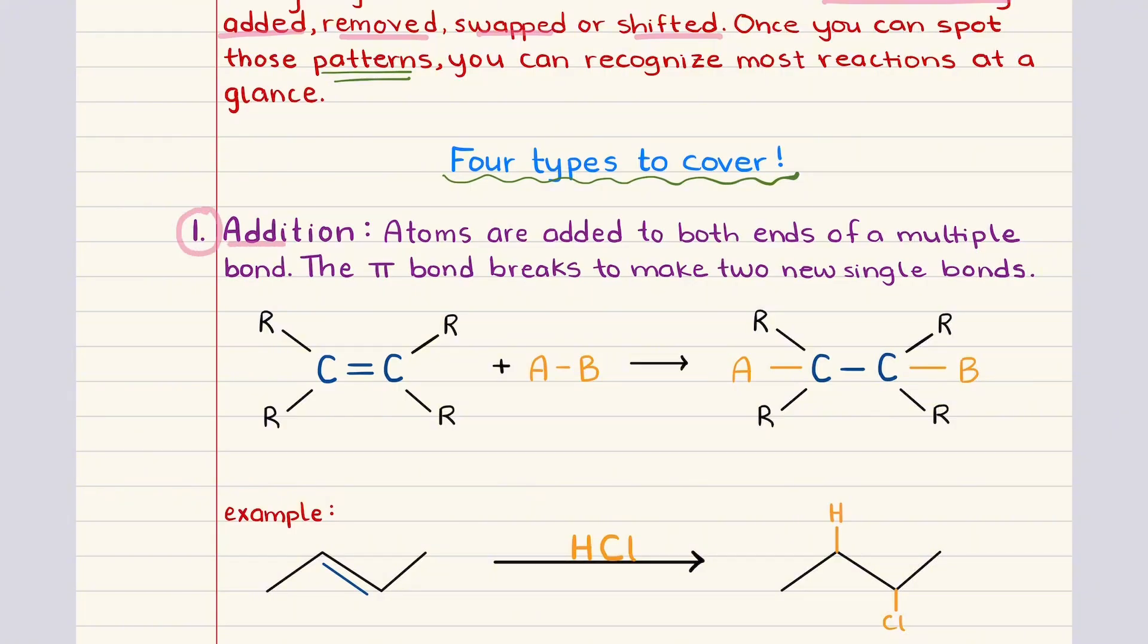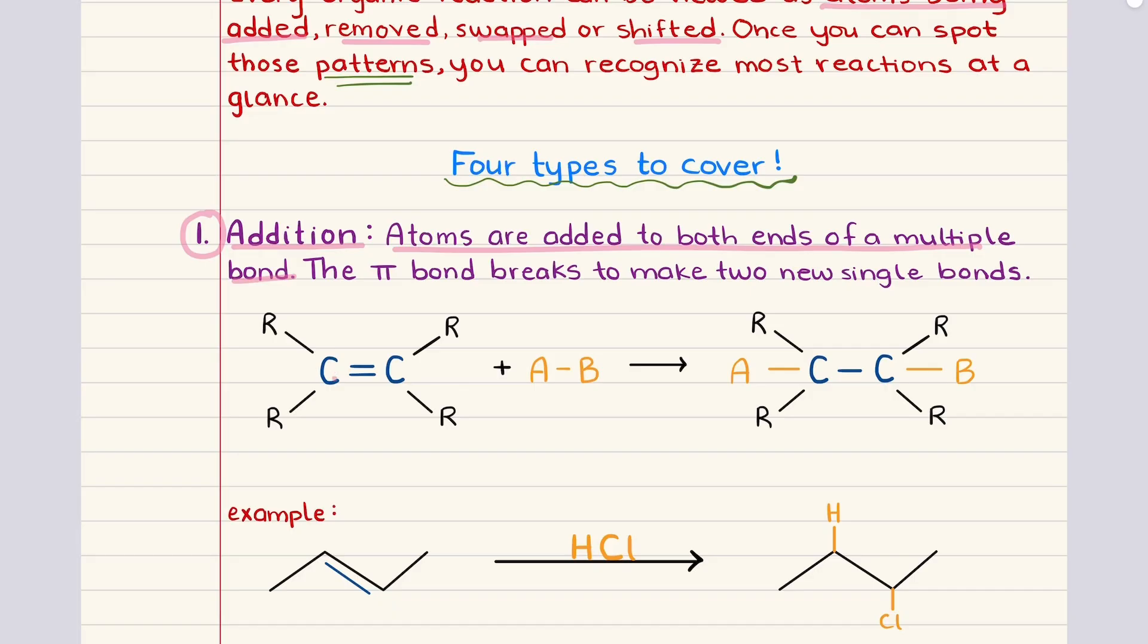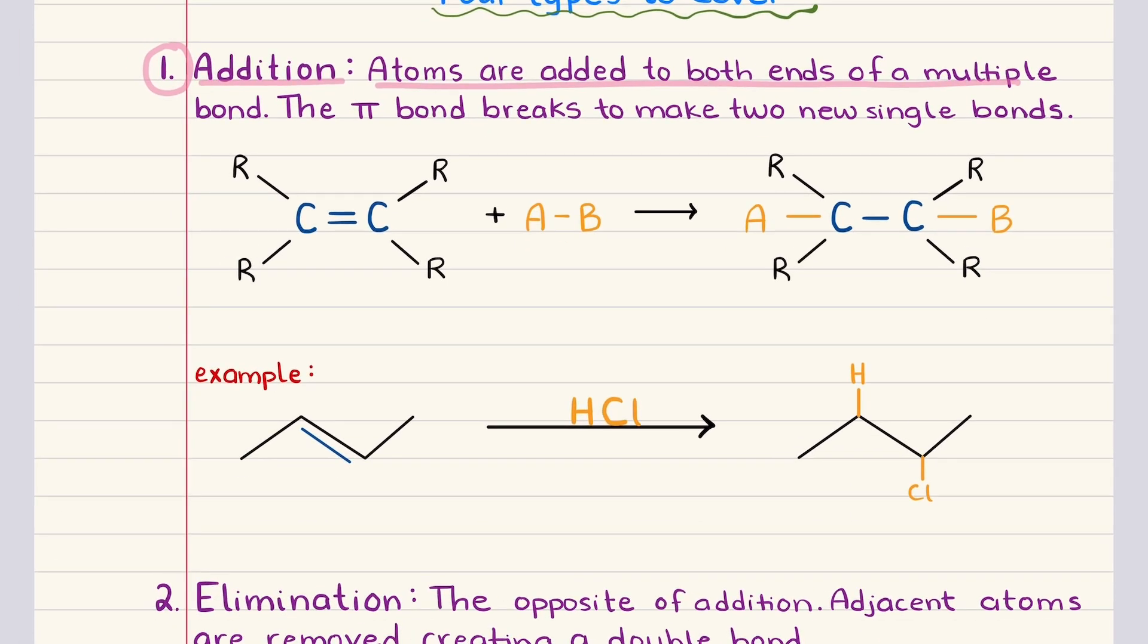The first category is addition, which describes reactions where atoms are added to both ends of a multiple bond. The key idea is that, for example, a carbon-carbon double bond contains a pi bond that's weaker than the sigma bond beneath it, and this pi bond can break during the reaction. When it breaks, the electrons that once form the pi bond become available to create new single bonds.